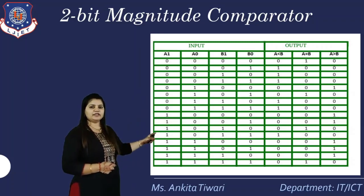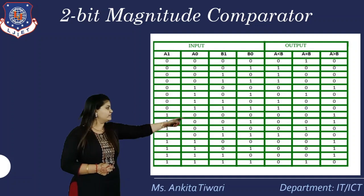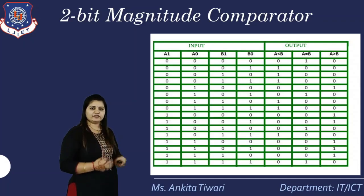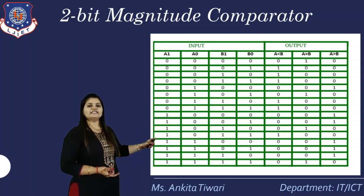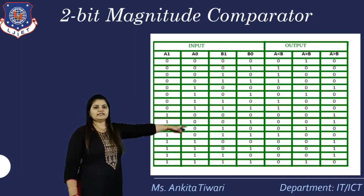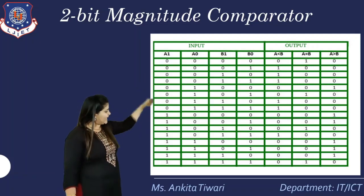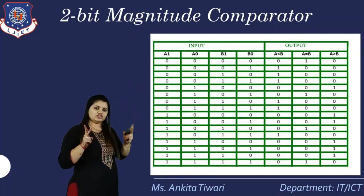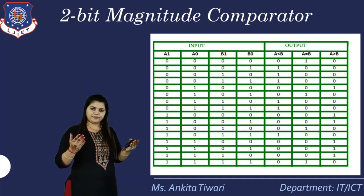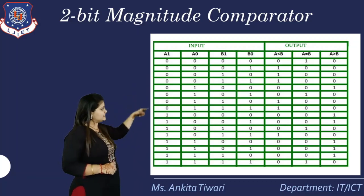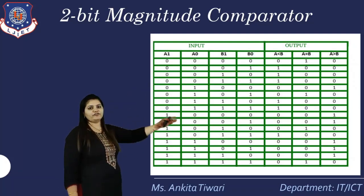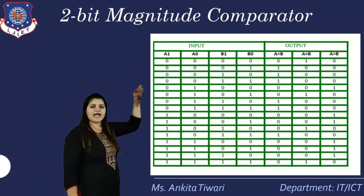For example, comparing '10' with '11': we know that 10 in binary is 2, and 11 is 3. Since 3 is greater, a (which is 2) is less than b (which is 3), so the a less than b output is 1. Similarly, for the combination 0000, both values are 00, which are equal, so a equal to b is 1. Each combination is evaluated this way to fill the truth table and get the output in three variable form.